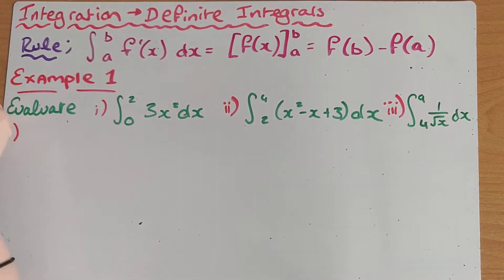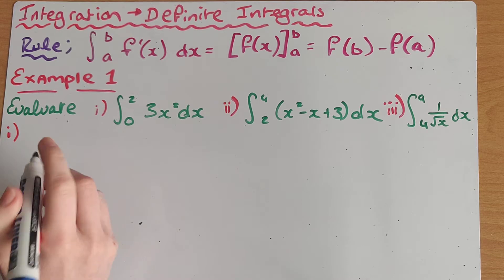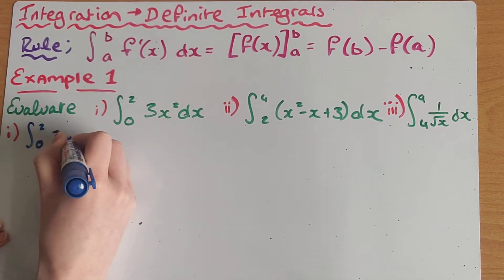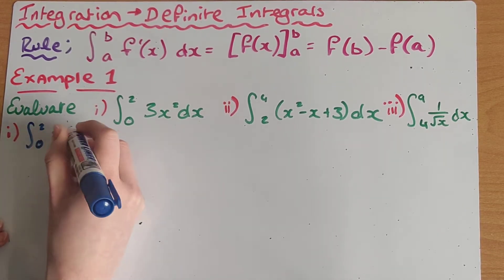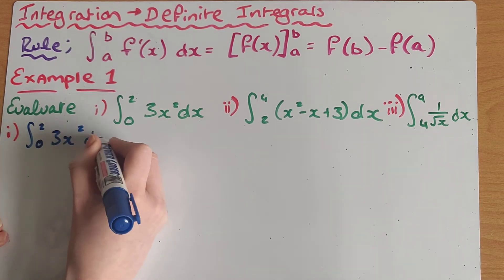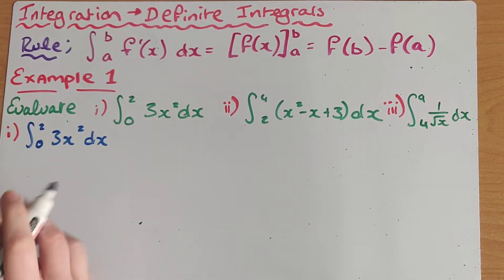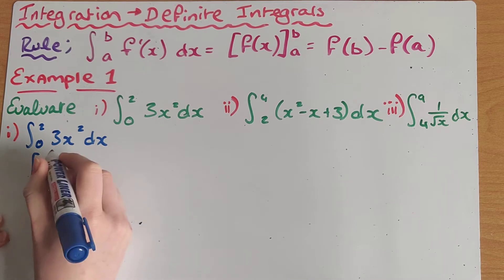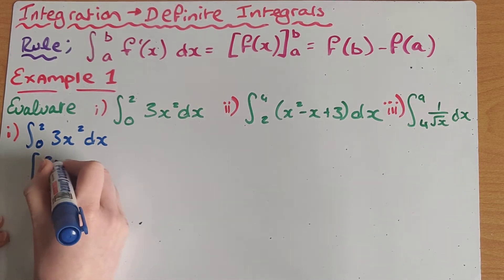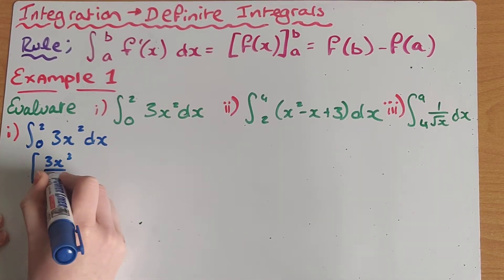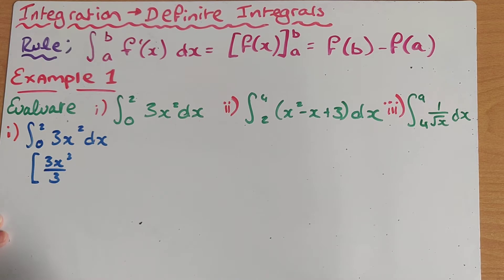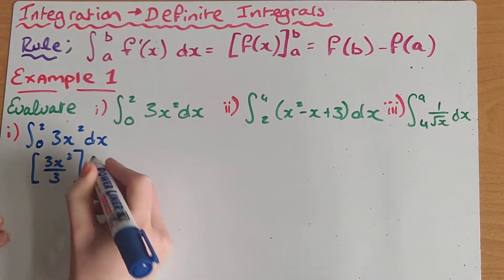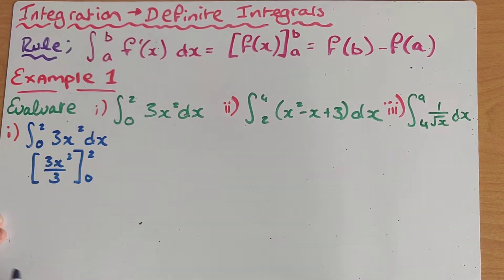So what I'm going to look at now for example one is the integral from zero to two of 3x² dx. The first thing I'm going to do is integrate it. I'm going to raise the power by one, so we get 3x³ and divide by the new power. I'm going to leave my two definite integral values on the outside — two and zero.